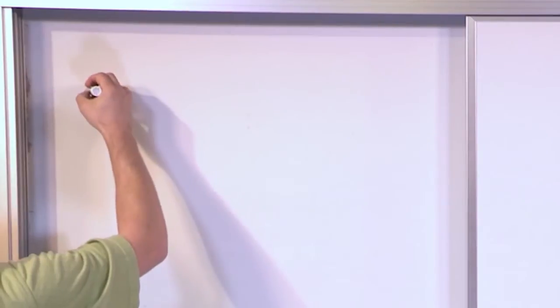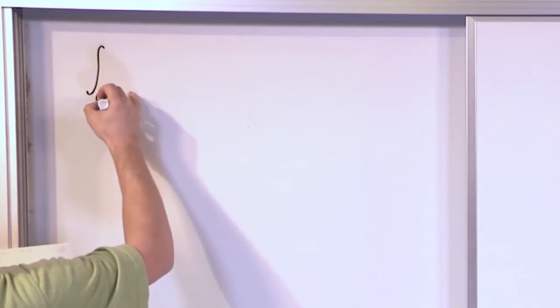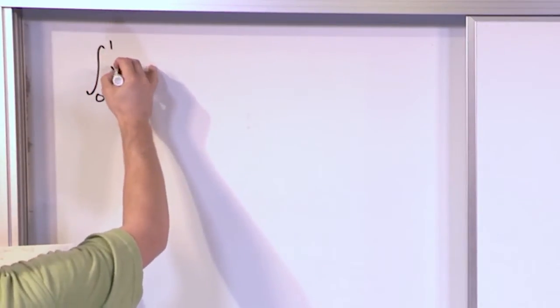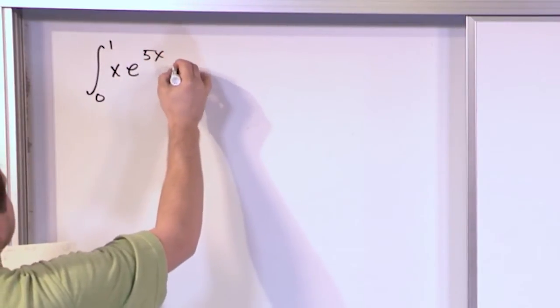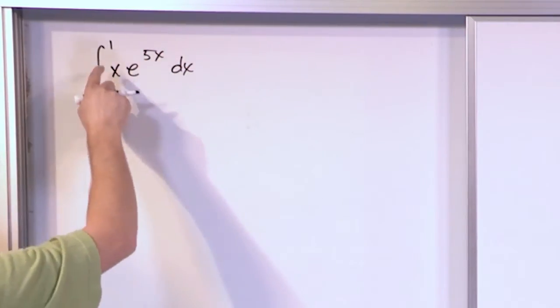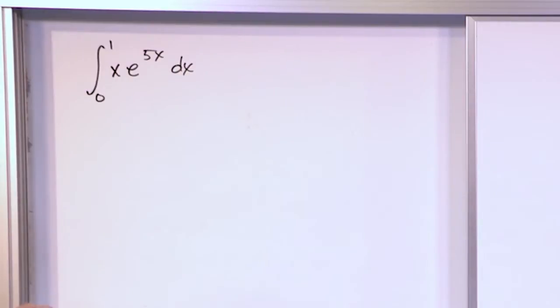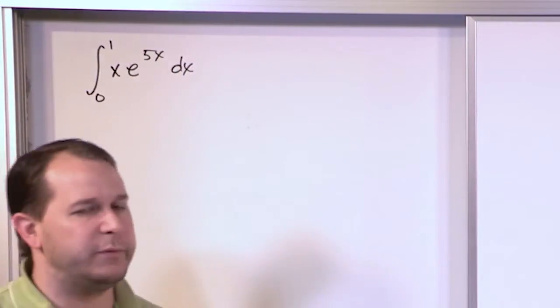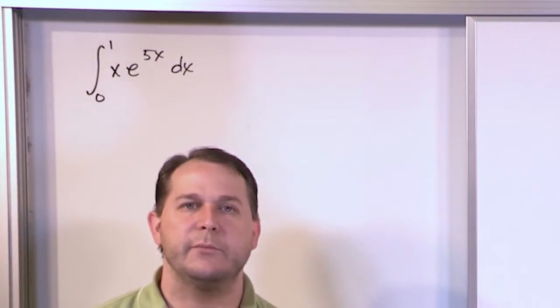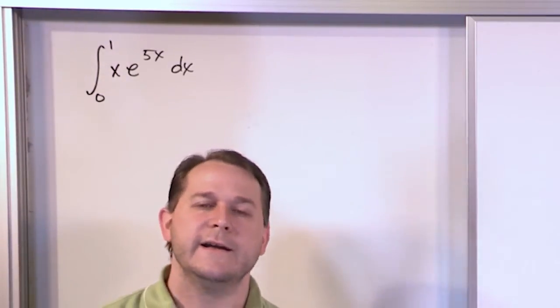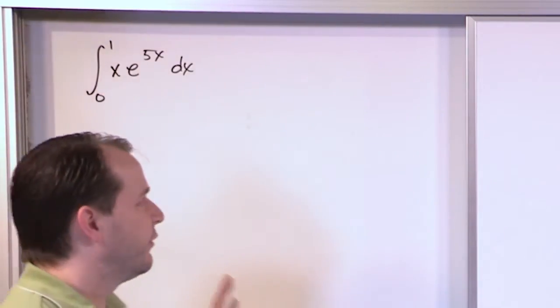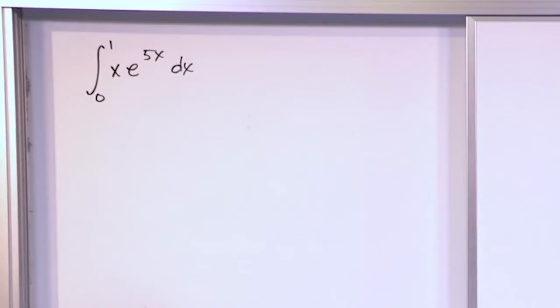Let's jump right into a problem that's actually going to be our first definite integral where we need to integrate by parts. We have the integral of x·e^(5x) dx, and this is a definite integral. All the other ones up to this point we've had no limits of integration. This integral actually has limits of integration, so we need to make sure to handle that during the problem.